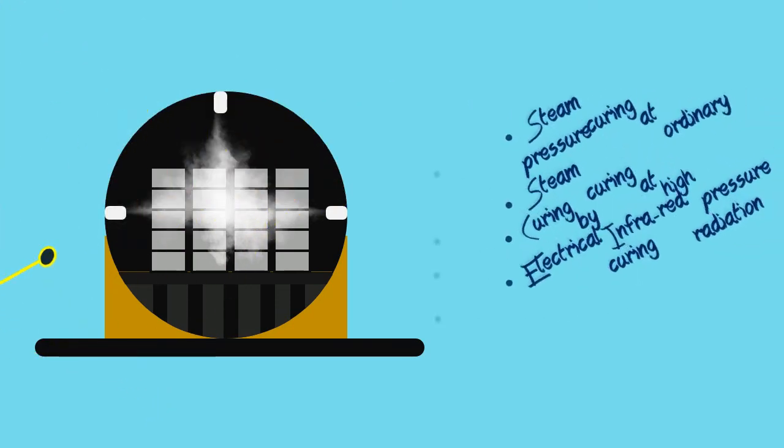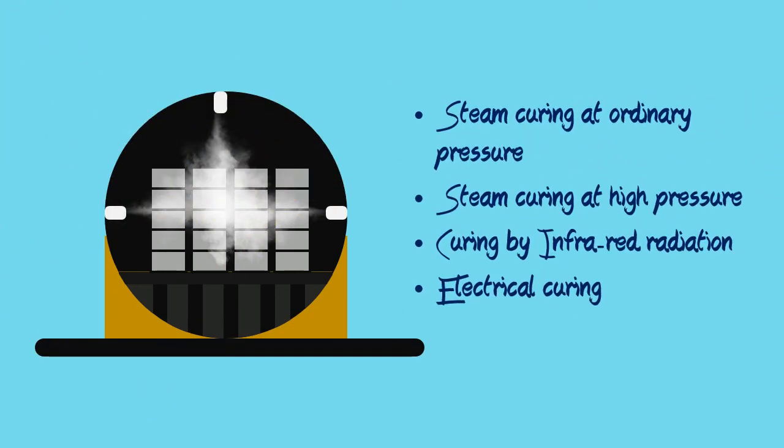The different methods of curing by application of heat are: steam curing at ordinary pressure, steam curing at high pressure, curing by infrared radiation, and electrical curing. We will discuss each method in detail in future videos.